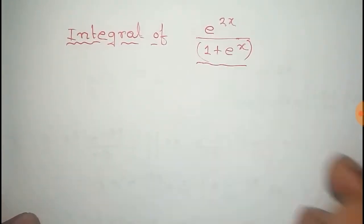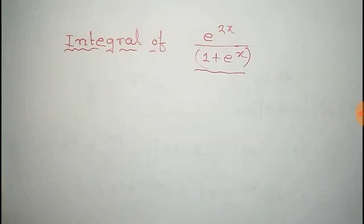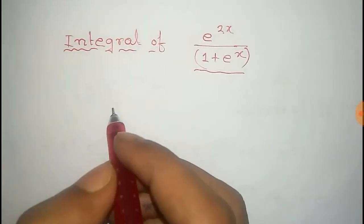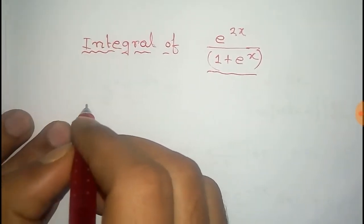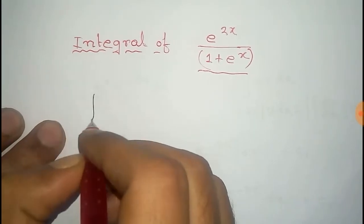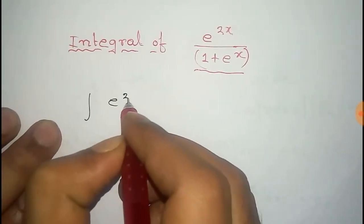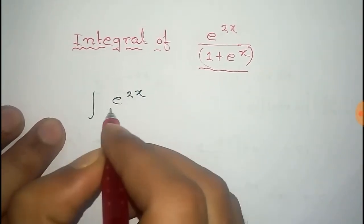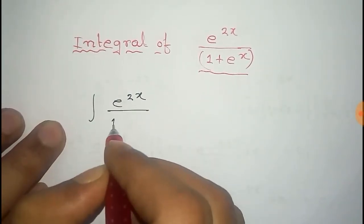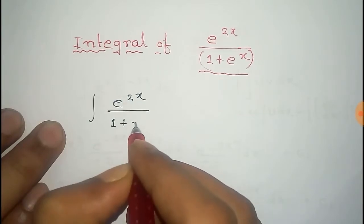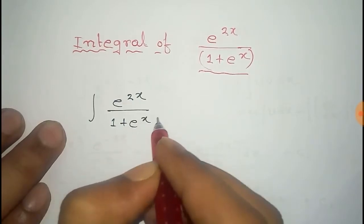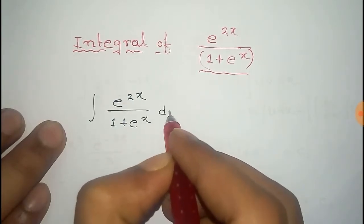In this video we will find the integral of e to the power 2x by 1 plus e to the power x. So first of all write this integral: e to the power 2x by 1 plus e to the power x, into dx.